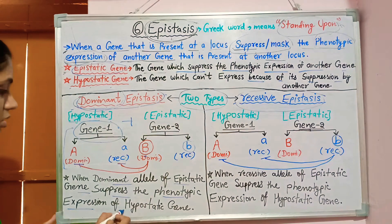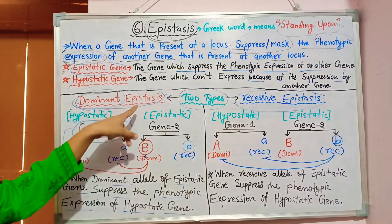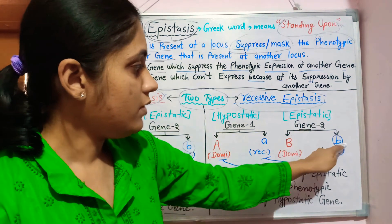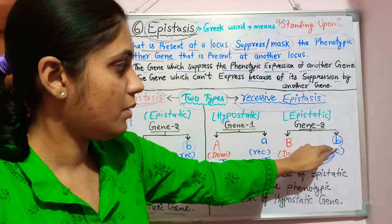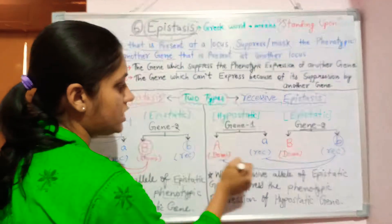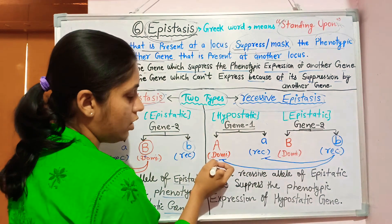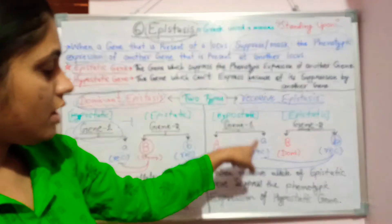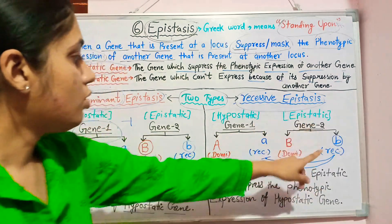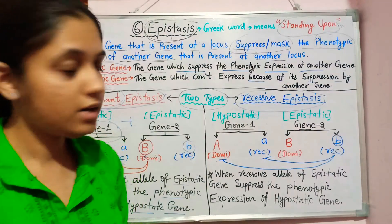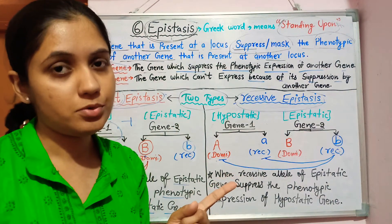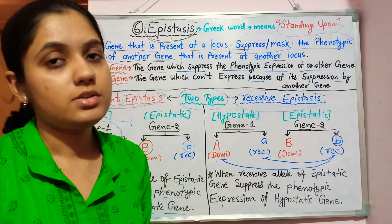When the dominant allele of the epistatic gene suppresses the phenotypic expression of the hypostatic gene, it is known as dominant epistasis. In recessive epistasis, the recessive allele of the epistatic gene (Gene 2) suppresses the hypostatic gene (Gene 1) — both its dominant allele and its recessive allele. Remember: in epistasis, the complete hypostatic gene — both alleles — is suppressed.